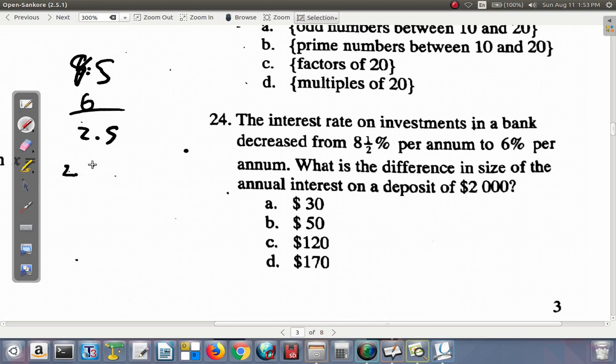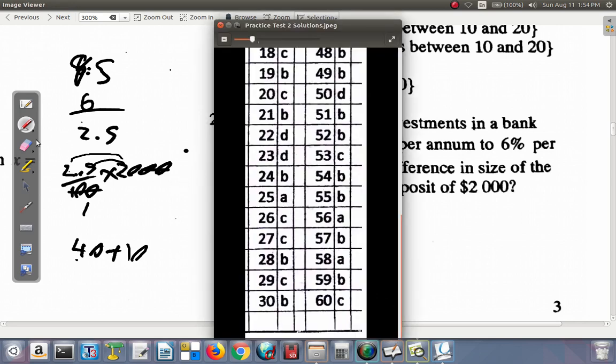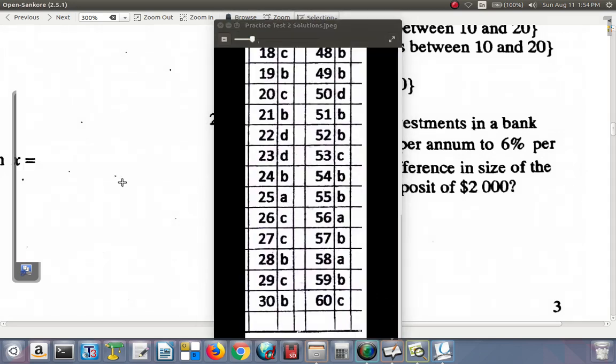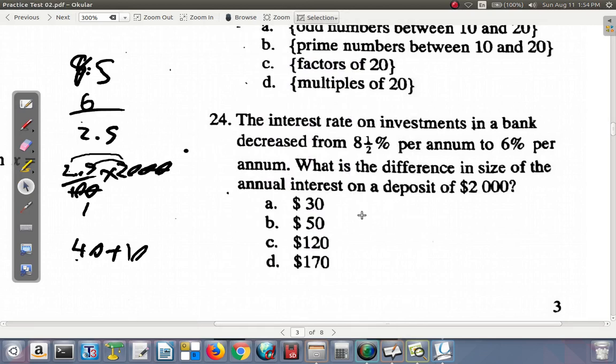Now, 2.5% of 2,000. 100 into 100, 100 into 2,020. 2.5 times 20. 2 times 20 is 40 plus half of 20 is 10, which is 50. So, question 24, that's B, $50.